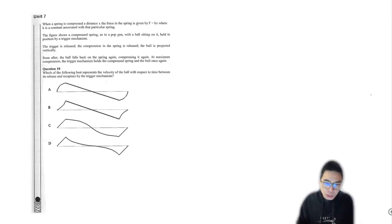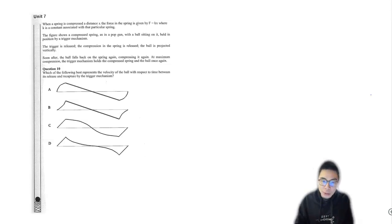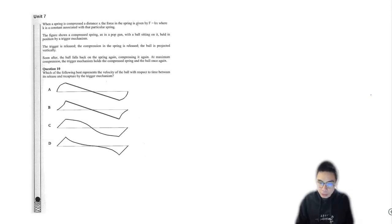Question 10: which of the following best represents the velocity of the ball with respect to time between its release and recapture by the trigger mechanism? Something to take note of straight away is that all the options A, B, C, and D are representations of the velocity of the ball with respect to time — velocity versus time.